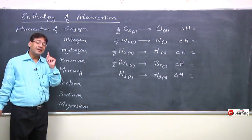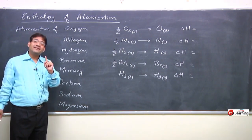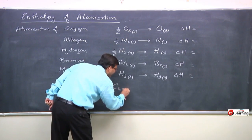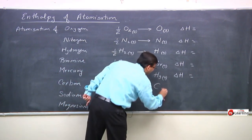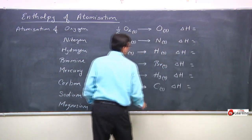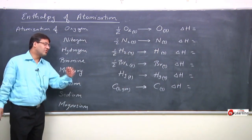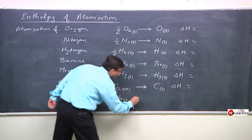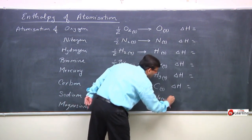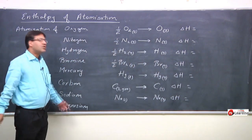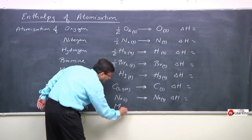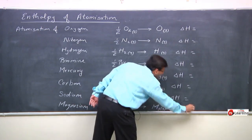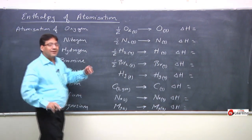For carbon: in its pure and stable condition, carbon is in solid state as graphite. So one mole of solid graphite carbon is converted to one mole of gaseous carbon atom — this is enthalpy of atomization of carbon. For sodium: sodium is also in solid state in pure and stable condition, so Na(s) gives Na(g). For magnesium: Mg(s) gives Mg(g) — this is enthalpy of atomization of magnesium.